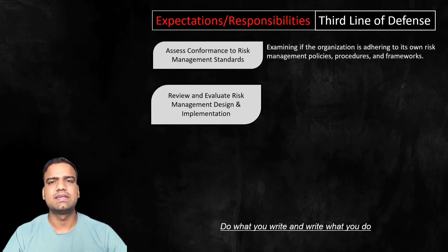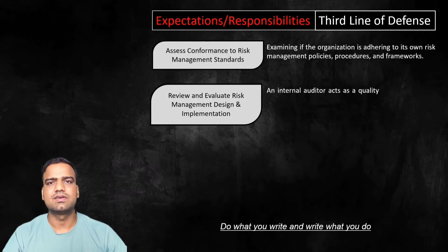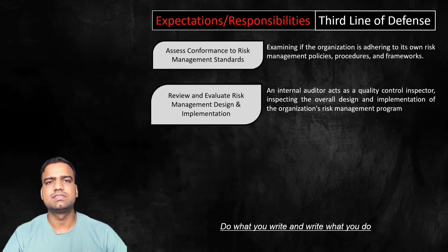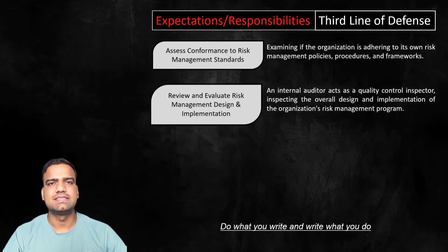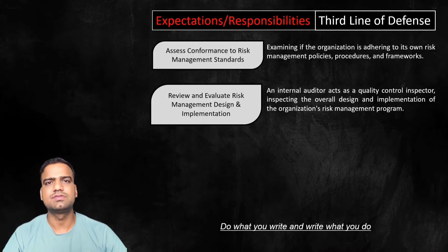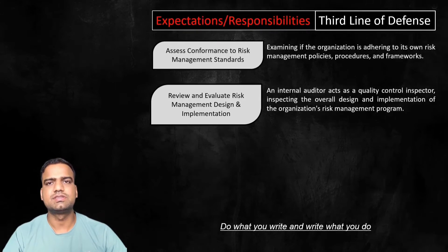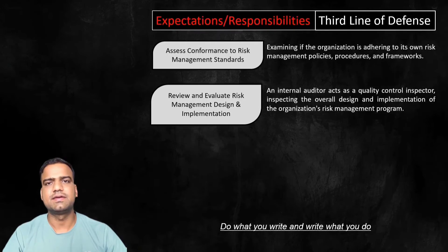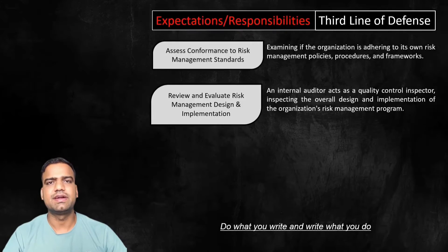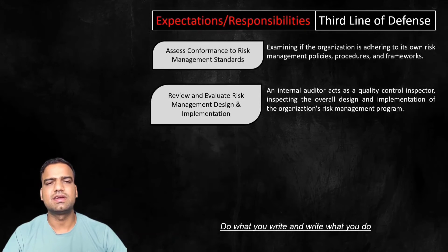The third line is also expected to review and evaluate risk management design and implementation. An internal auditor acts as a quality control inspector, inspecting the overall design and implementation of the organization's risk management program. This involves assessing whether the program is tailored to the organization's specific needs and objectives, whether it is being implemented effectively across all business units, and whether it is achieving its intended purpose of identifying, assessing, and mitigating risks — for example, checking if there are sufficient training programs for all employees and if risk communication channels are clear and effective.